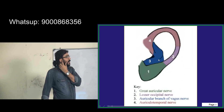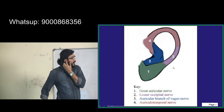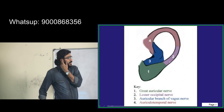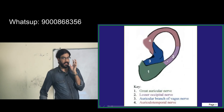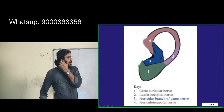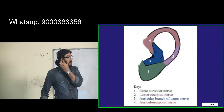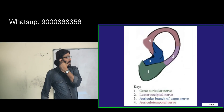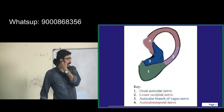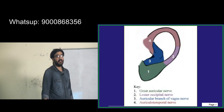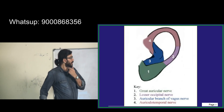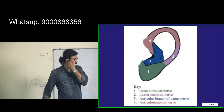The concha has two parts: cymba concha and cavum concha. The cymba concha is at the level of the attachment of the crus, the upper part. Cymba concha is related to the mastoid antrum - the surface marking for the mastoid antrum is cymba concha, which is Mackewan's triangle. Cavum concha leads towards the external auditory canal and is supplied by the vagus.